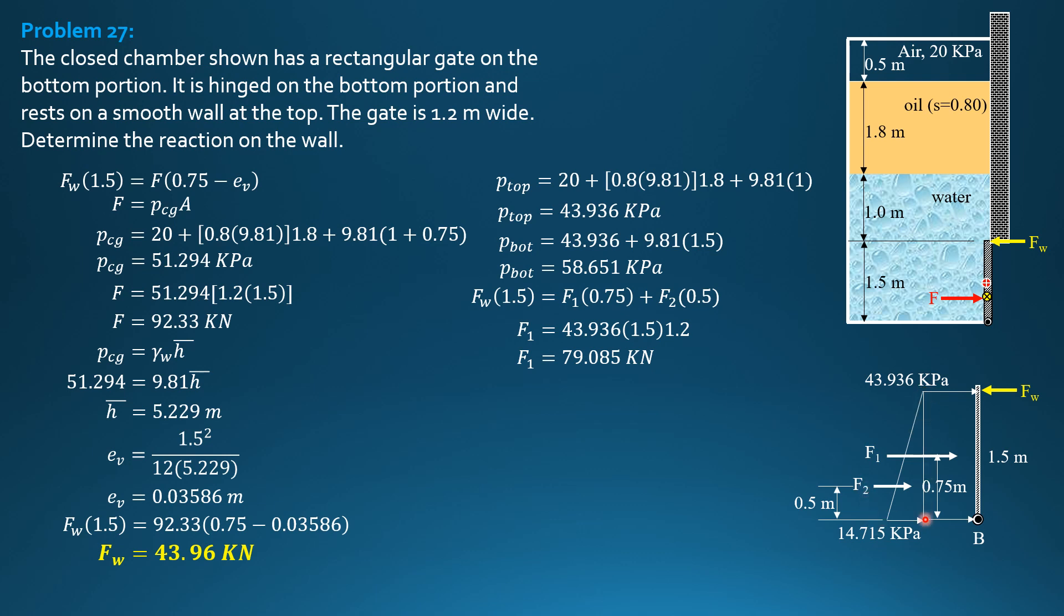F2 is area of triangle times 1.2 to make it volume. Area of triangle is 1.5 or 0.5 of 14.715 times 1.5 times 1.2 perpendicular to the board. So F2 is 13.244 kilonewtons.